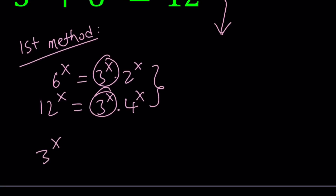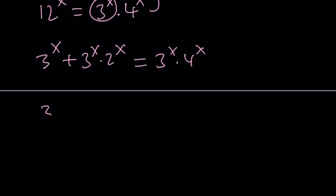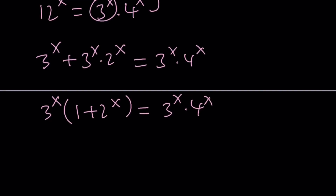So we can write 6 to the x as 3 to the x times 2 to the x, and 12 to the x as 3 to the x times 4 to the x. Then we factor out 3 to the power x, giving us 3 to the x times the quantity 1 plus 2 to the power x equals 3 to the power x times 4 to the power x.